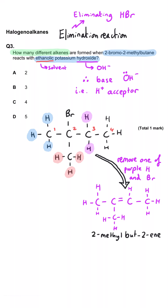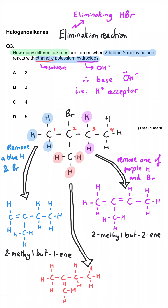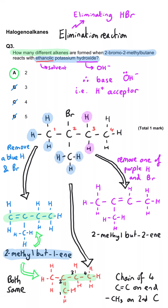Removing a hydrogen from the left-hand side gives 2-methylbut-1-ene. Removing a hydrogen from the methyl group also gives 2-methylbut-1-ene — the same alkene again. So we can only make two different alkenes, and A is the correct answer.